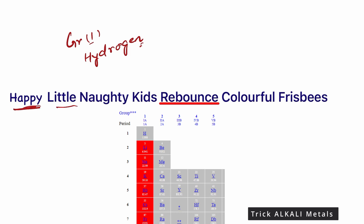'Happy Little Naughty Kids Rebounds Colorful Frisbees' — where H stands for hydrogen, Li for lithium, Na for sodium, K for potassium, Rb for rubidium, Cs for cesium and Fr for francium. For more such tricks, subscribe to the channel.